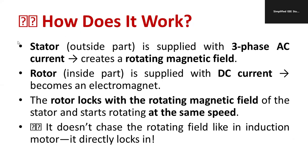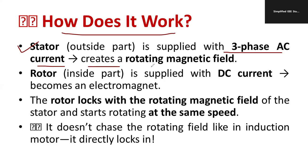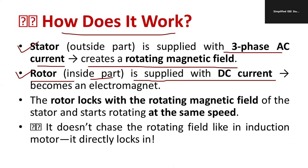How does a synchronous motor work? First, the stator is the outer part and is supplied with three-phase AC current. The synchronous motor converts electrical energy into mechanical energy. The three-phase AC applied to the stator creates a rotating magnetic field, which can be calculated using the formula 120f/p. The rotor is the second component, located inside, and is provided with DC current from an external supply.